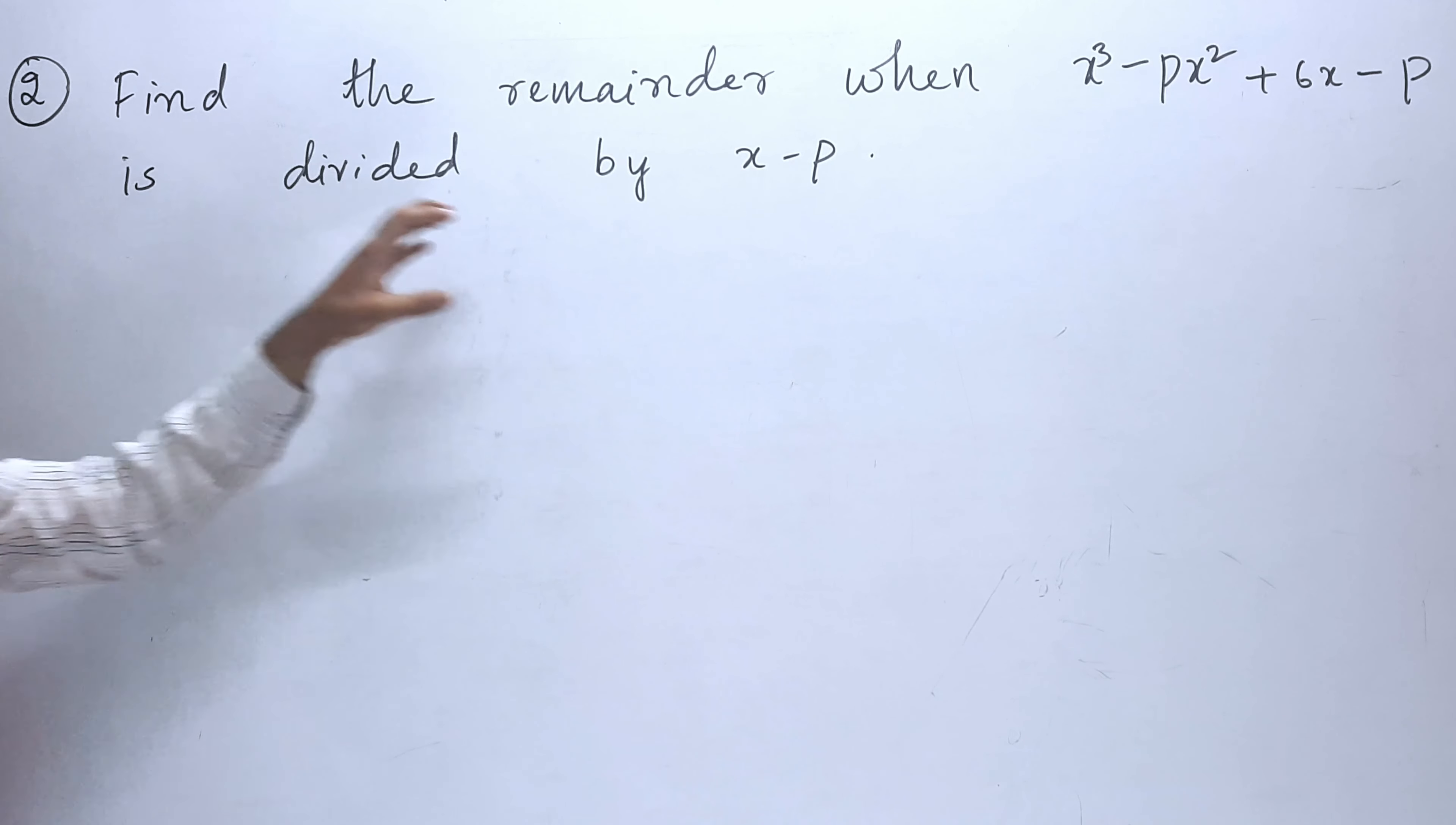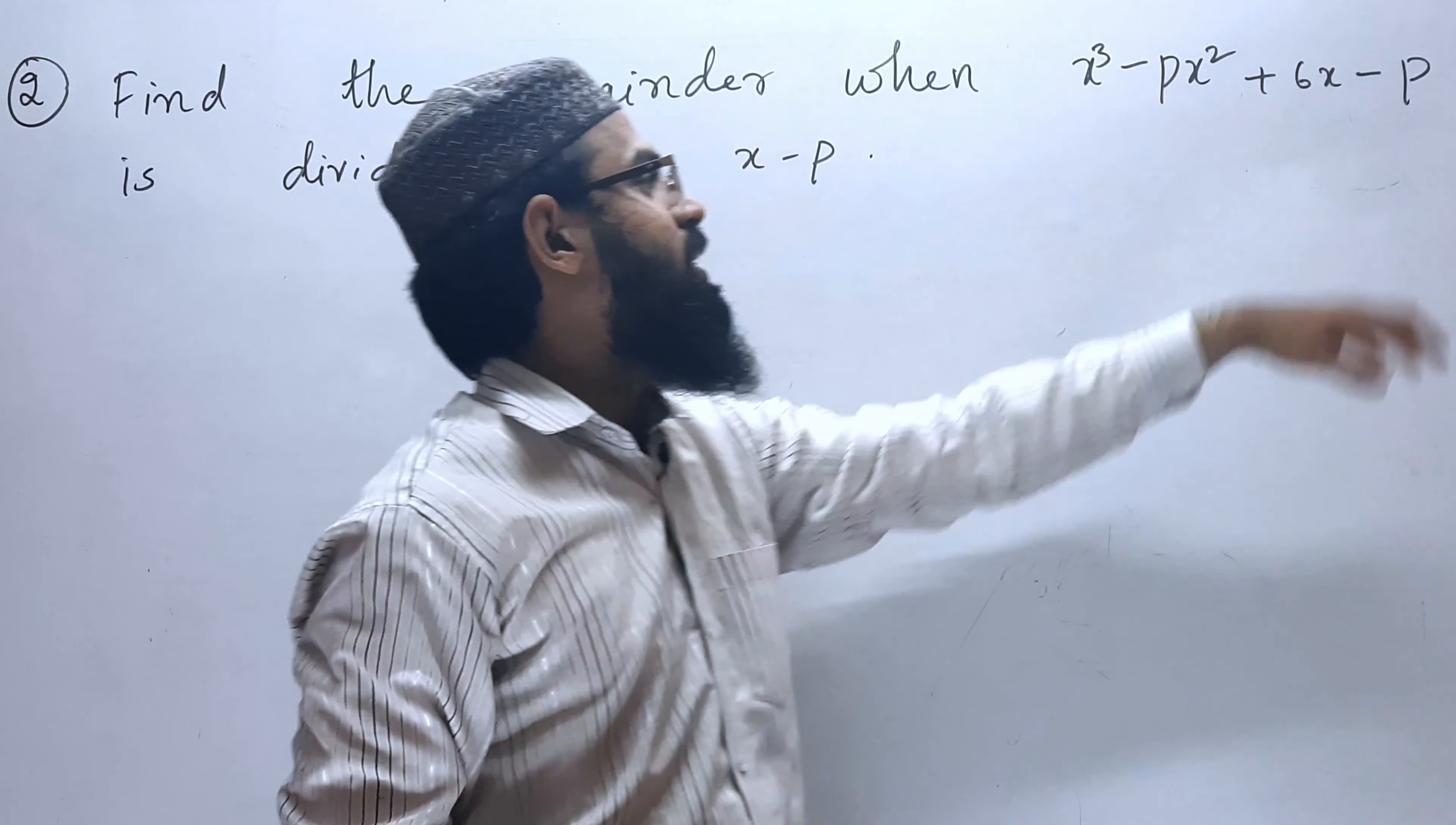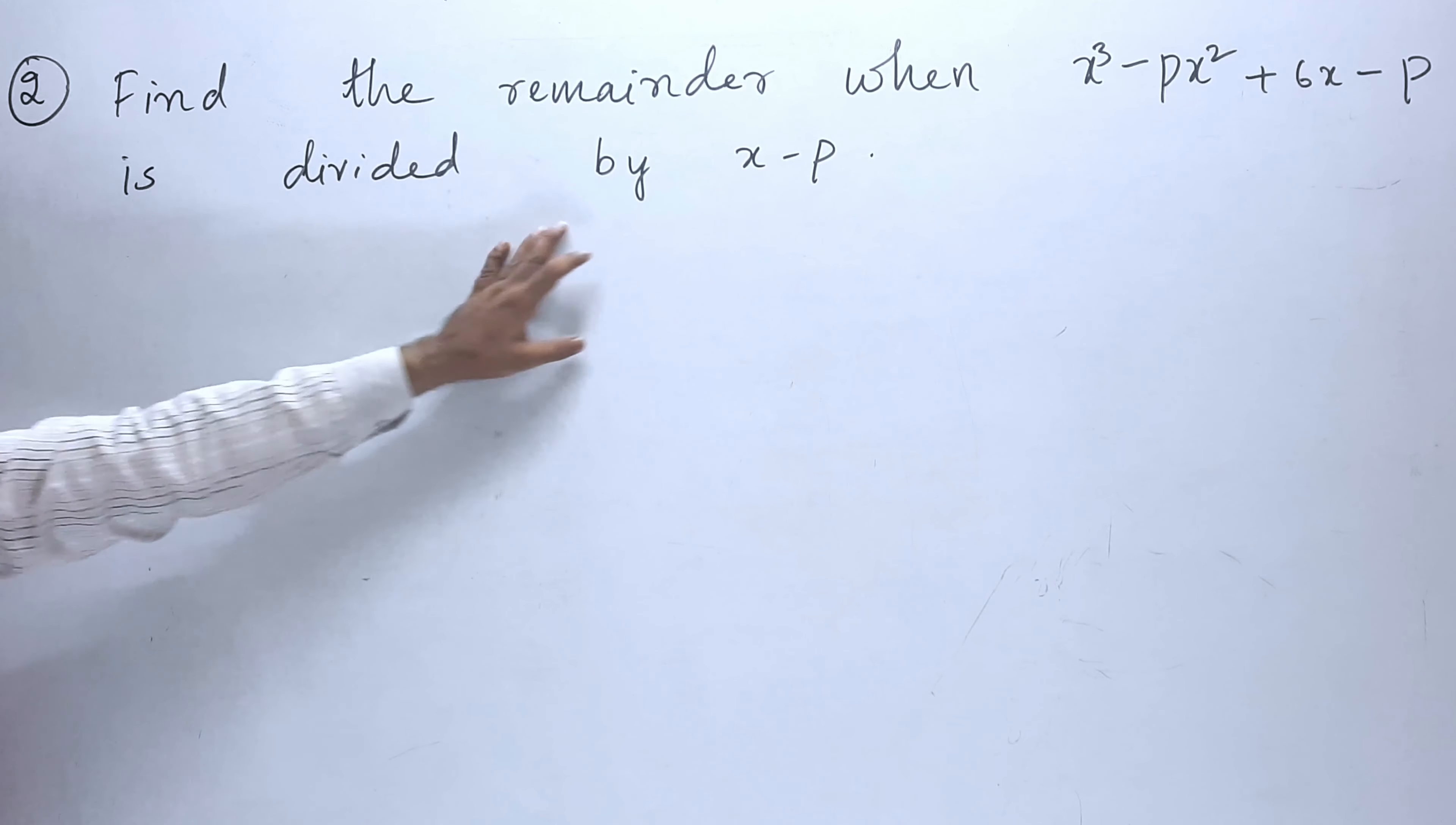Second problem: find the remainder when x cube minus px square plus 6x minus p is divided by x minus p.